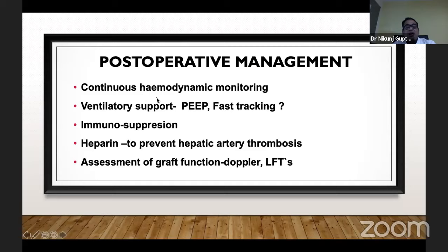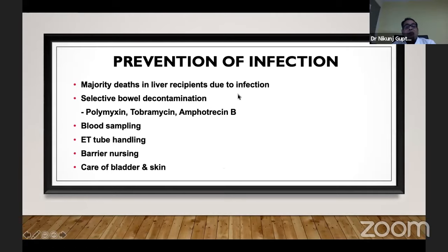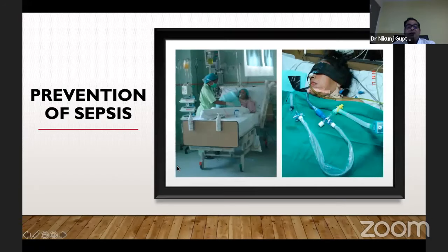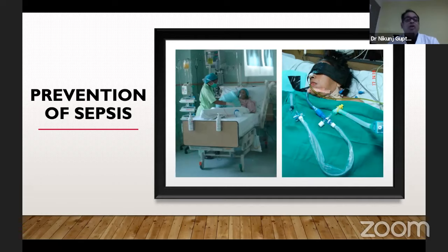For post-operative management, continuous hemodynamic monitoring is required. Fast tracking is always indicated where possible, then immunosuppression with the help of hepatologists. Heparin is used if there is hepatic artery thrombosis. Assessment of graft function and prevention of infection is of utmost importance. Proper blood sampling with sterile technique, ETU handling, barrier nursing, care of the bladder and lines — everything is required under proper sterile conditions. Any mortality or morbidity from liver transplant — the most important cause is sepsis, so at any cost we should be preventing sepsis.